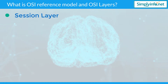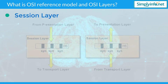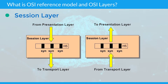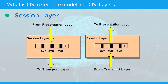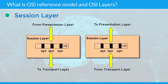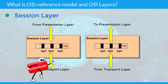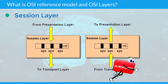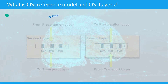Session layer: This layer sets up, coordinates, and terminates conversations. Services include authentication and reconnection after an interruption. On the internet, transmission control protocol and user datagram protocol provide these services for most applications.